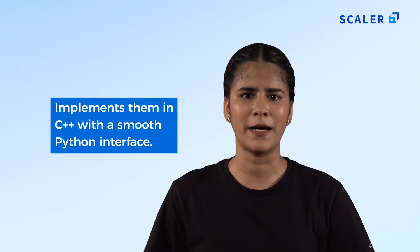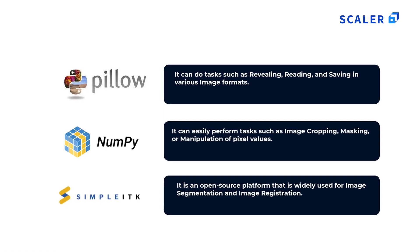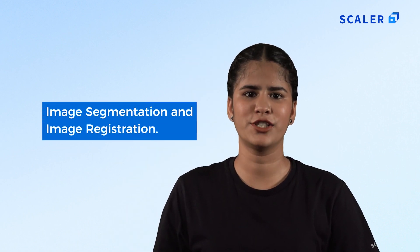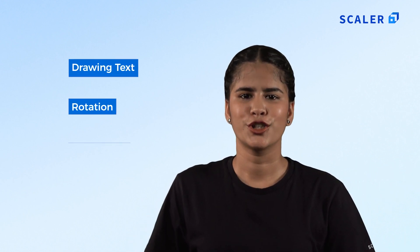Mahotas is an image processing and computer vision library designed for bio-image informatics. It reads and writes images as NumPy arrays and is implemented in C++ with a Python interface, offering functions like watershed, morphological processing, and template matching. SimpleITK is an open-source platform for image segmentation and image registration. pgMagick is a GraphicsMagick binding for Python that allows operations such as drawing text, rotation, sharpening, and resizing on images.